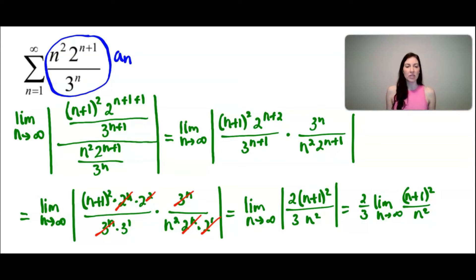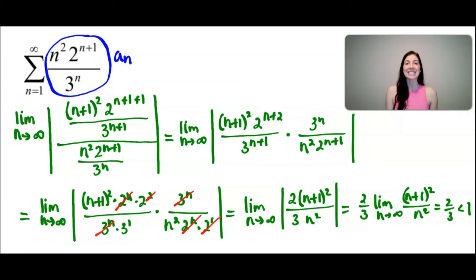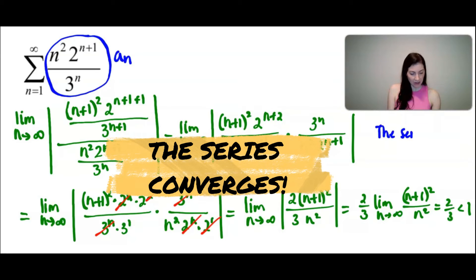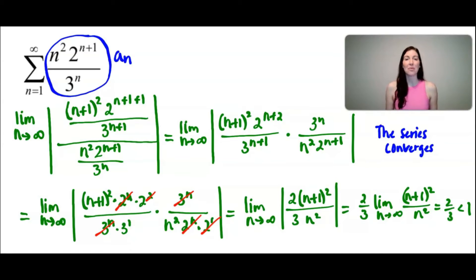So what is the limit as n approaches infinity of (n+1)² over n²? Because the degree of the numerator and denominator are the same, we can find this limit by taking the ratio of the leading coefficients, which is 1 divided by 1. So we get 2/3 times 1, which is 2/3. And since 2/3 is less than 1, by the ratio test the series converges — meaning this series will sum to a finite number. The ratio test simply tells us whether the series will diverge or converge, not what that finite number is.